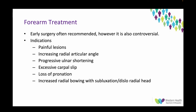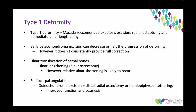There is controversy in this field. Early surgery is often recommended. Indications include painful lesions, increased radial articular angle, progressive ulnar shortening, excessive carpal slip, loss of pronation, or bowing. For Type 1 deformity, Masada recommends exostosis excision, radial osteotomy, and immediate ulnar lengthening. Early osteochondroma excision can decrease or halt deformity progression but doesn't consistently provide full correction. Ulnar translocation of the carpal bones can be treated with ulnar lengthening via Z-cut osteotomy, though ulnar shortening is likely to recur. Radiocarpal angulation can be treated with osteochondroma excision and distal radial osteotomy, or hemiepiphyseal tethering if sufficient growth remains — showing good cosmetic results with modest functional improvement.